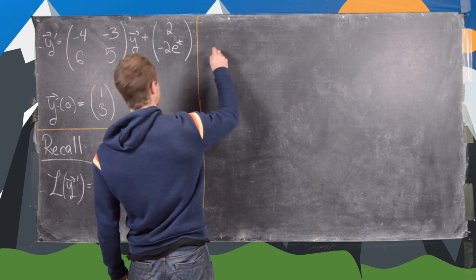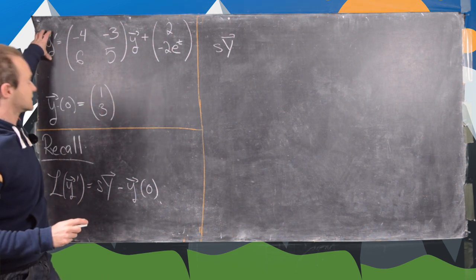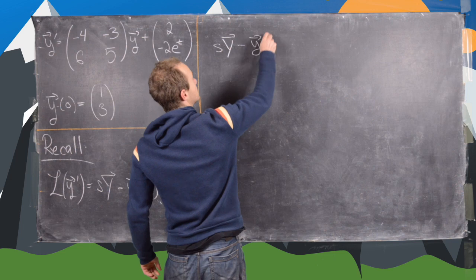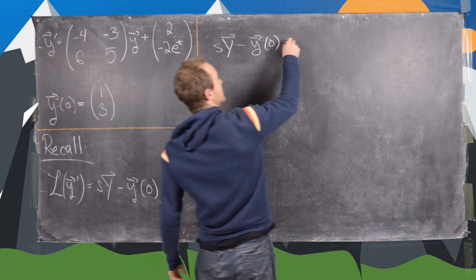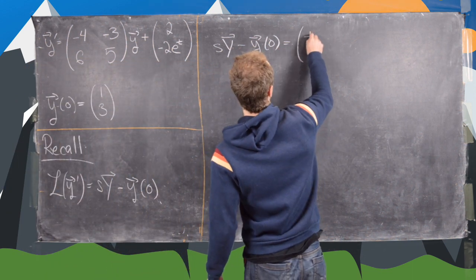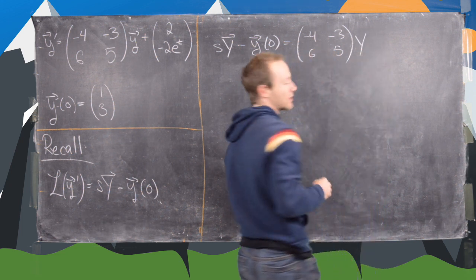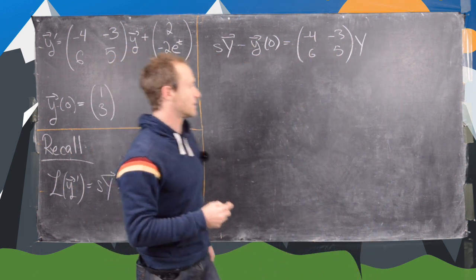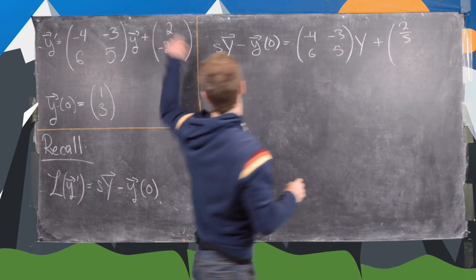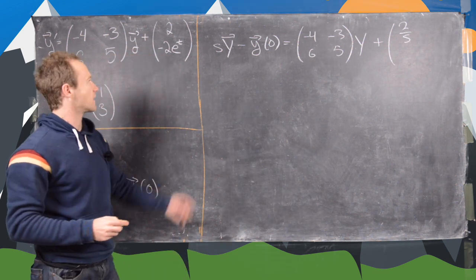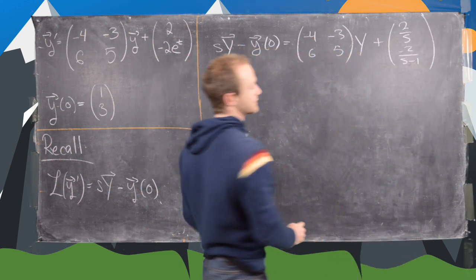Applying the Laplace transform gives us s times vector Y minus y evaluated at 0, and then we have the matrix [-4, -3; 6, 5] times Y. Applying the Laplace transform to the vector valued function, we get 2/s for the first component, since the Laplace transform of 2 is 2/s, and then -2/(s-1) for the second component, since that's the Laplace transform of e^t.